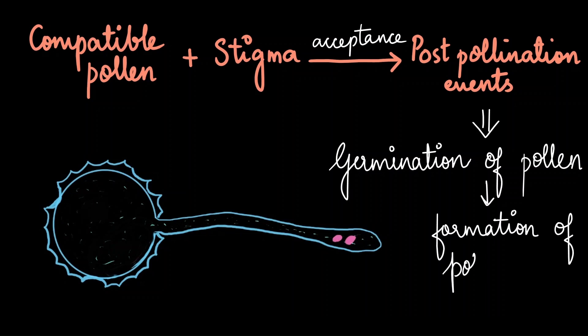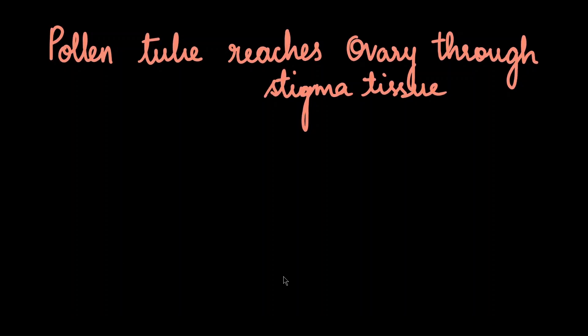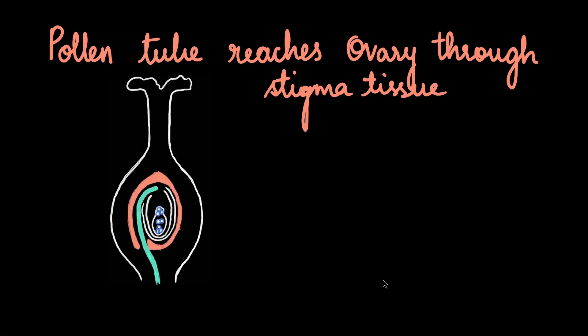Within the pollen tube, cytoplasm is present and it carries two male gametes. Once the pollen has germinated, the pollen tube grows and reaches the ovary of the female by growing through the stylar tissue. So here we have the female part — stigma, style, and ovary.